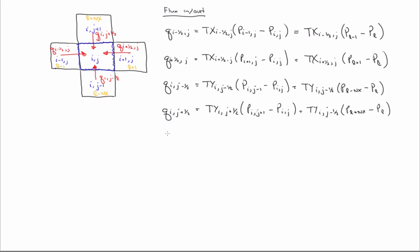So that's the flux in and out. We also have the accumulation. It's similar to what we had before, just before we only had an i-th grid block. Now we have an i-j grid block. So that's the accumulation term,